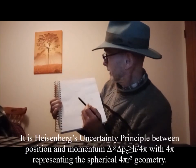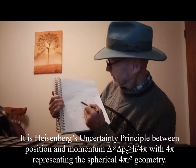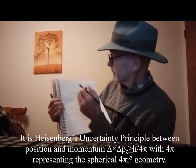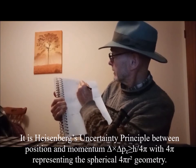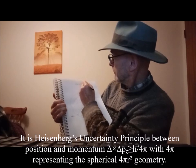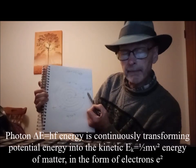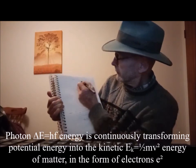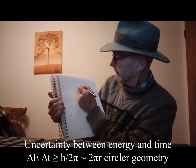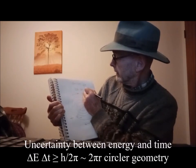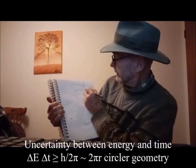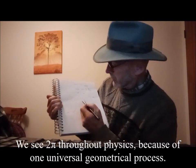We have uncertainty between position and momentum as the wave radiates out. This can be seen as Heisenberg's uncertainty principle between energy and momentum. We see 4pi in the equation representing the spherical geometry. We can also reformulate this between energy and time, because it's based on photon energy, and the process forms a passage of time — therefore we have uncertainty between energy and time. This uncertainty will always be greater than the Planck constant divided by 2pi, with 2pi representing the circumference of the sphere.